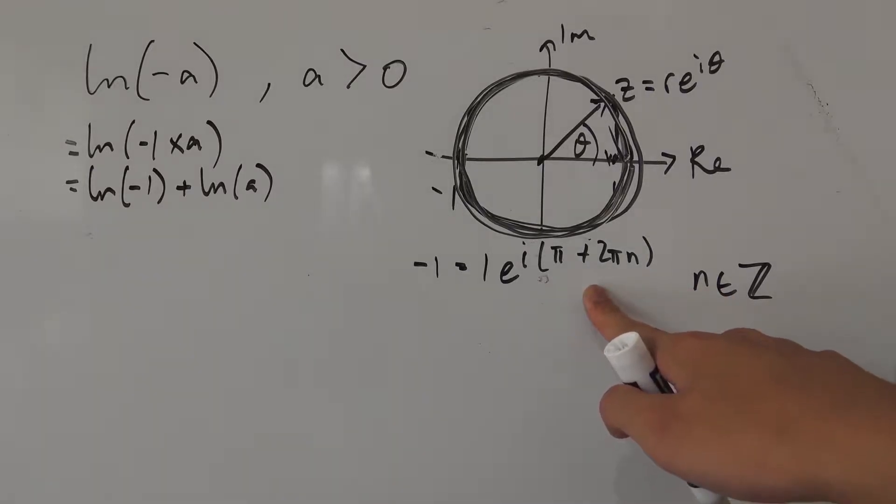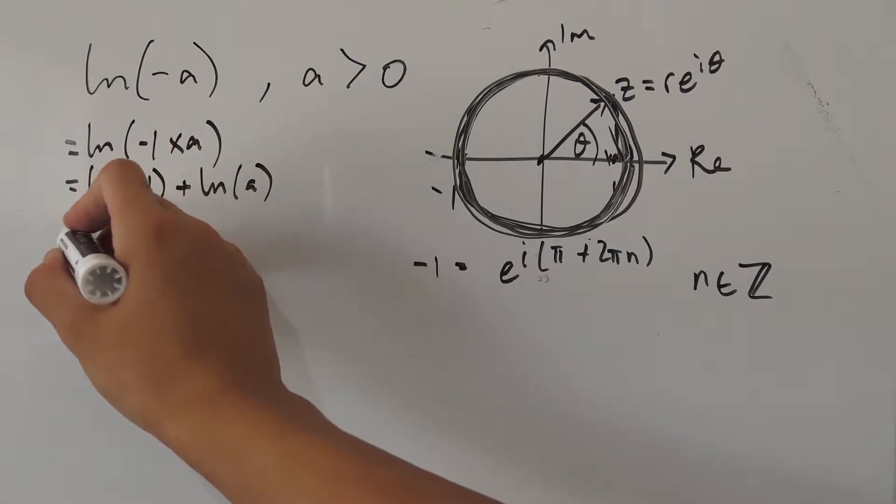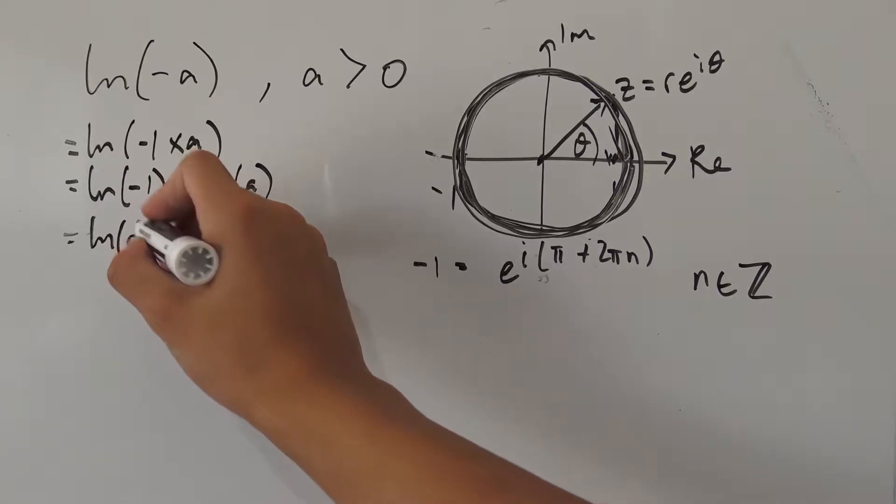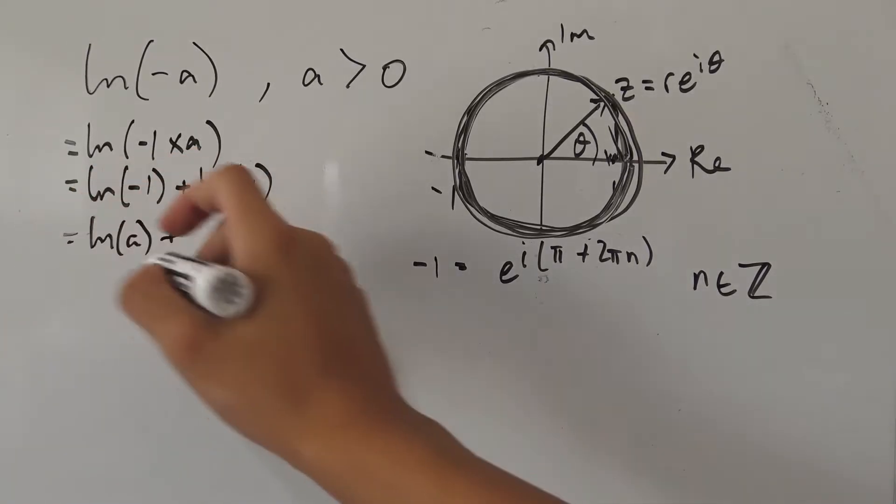So n has to be an integer. So this is kind of like the general form that we want. So this is our expression for negative one here. We can get rid of this one because it's doing absolutely nothing. So let's go back to here. I'm going to write the natural log of a first because we know how to deal with that, and we're going to add it with this part.